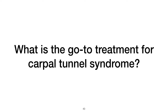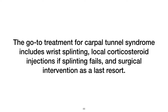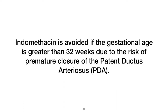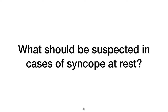What is the go-to treatment for carpal tunnel syndrome? The go-to treatment includes wrist splinting, local corticosteroid injections if splinting fails, and surgical intervention. When is indomethacin avoided as tocolysis in the management of preterm labor? Indomethacin is avoided if the gestational age is greater than 32 weeks due to the risk of premature closure of the patent ductus arteriosus (PDA).